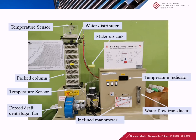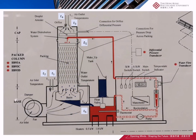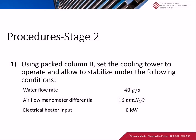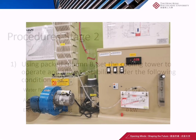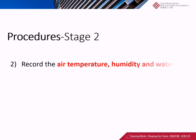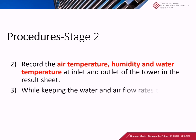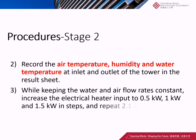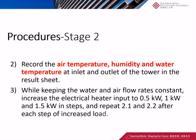Here is the picture showing the whole attached rig. In Stage 2, using packed column B, set the cooling tower to operate and allow it to stabilize under the following conditions. After stabilizing the test rig, record the air temperature, humidity, and water temperature at the inlet and outlet of the tower in the result sheet. The last step in Stage 2 is to keep the water and air flow rate constant and increase the electrical heater input to 0.5 kilowatt, 1 kilowatt, and 1.5 kilowatt in steps, and repeat steps 2.1 and 2.2 after each increase in load.